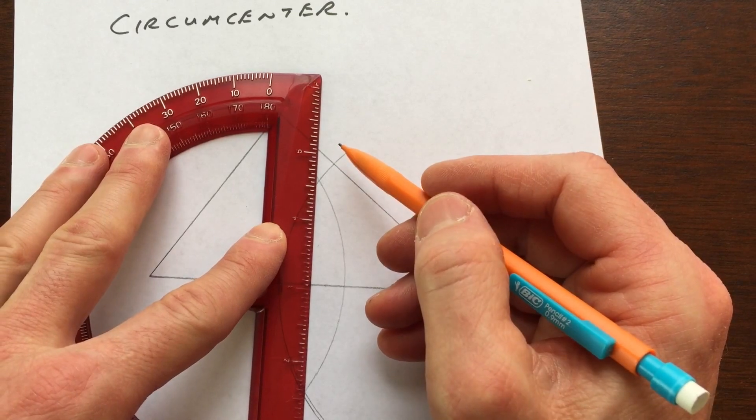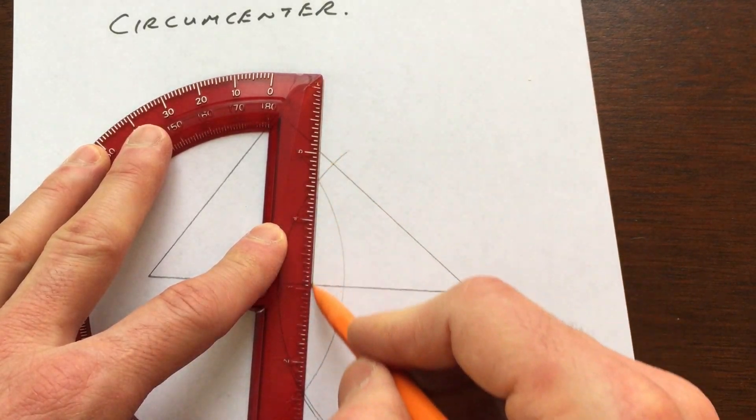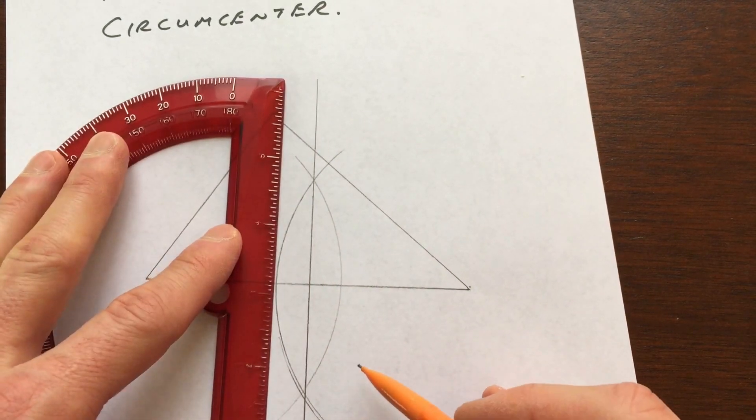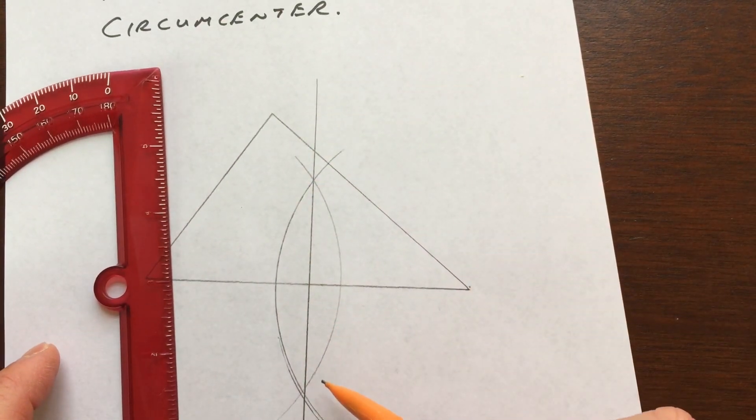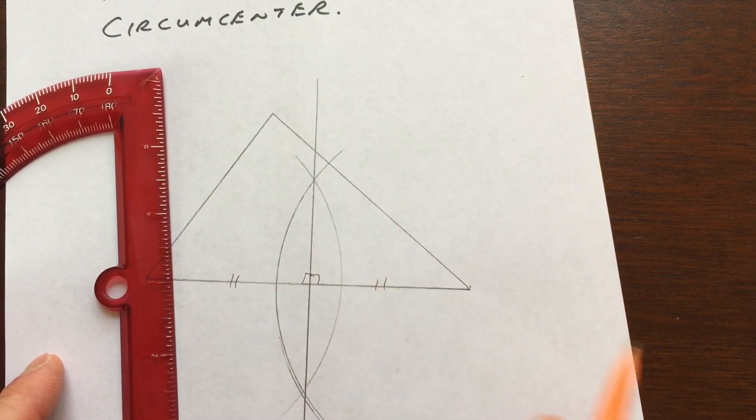Now when you draw these, I always draw them a little bit longer than I think I need, so that I don't have to go back and make them longer again. So there's the perpendicular bisector. You can see that's the right angle, and it's bisecting the side of that triangle.